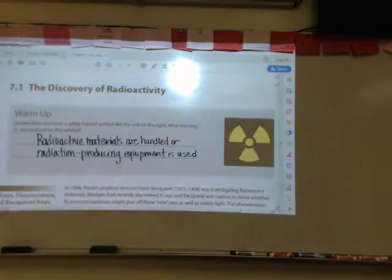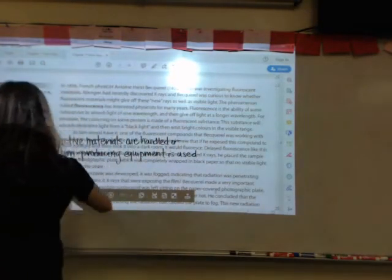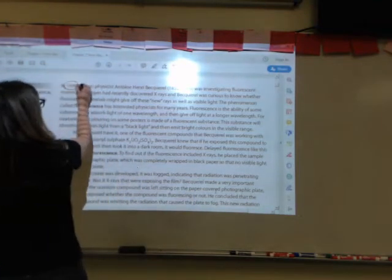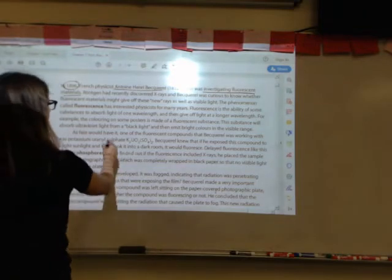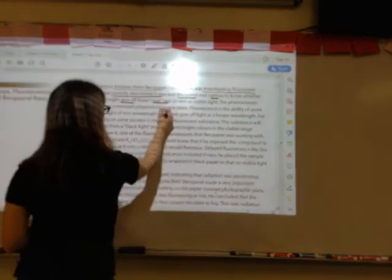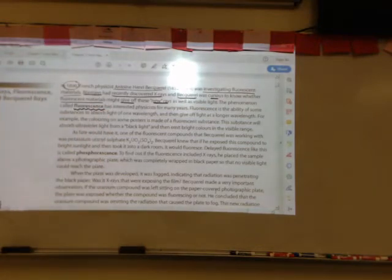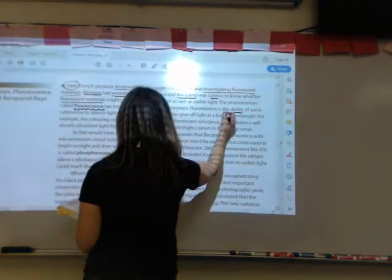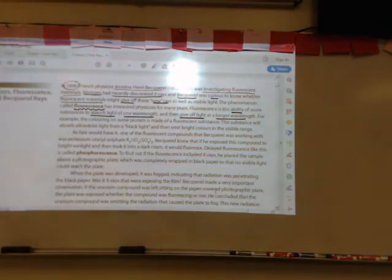In 1896, Antoine Bacquerel was investigating fluorescent materials. Ronkin had recently discovered x-rays and Bacquerel was curious to know whether fluorescent materials give off these new rays as well as visible light. This phenomenon was known as fluorescence and had interested physicists for quite a while. Fluorescence is the ability of some substances to absorb light at one wavelength and then give off light at a longer wavelength. For example, the coloring on some posters is made of a fluorescent substance that will absorb ultraviolet light from a black light and then emit bright colors that you can see in the visible range.